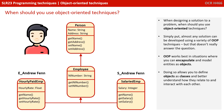So it begs the question: when designing a solution to a problem, when should you use OO techniques? Well, simply put, almost any solution can be developed using a variety of OOP techniques, but that doesn't really help you with answering the question. OOP works best in situations where you can encapsulate and model entities as objects. Doing so allows you to define objects as classes, and better understand how they relate to and interact with each other.